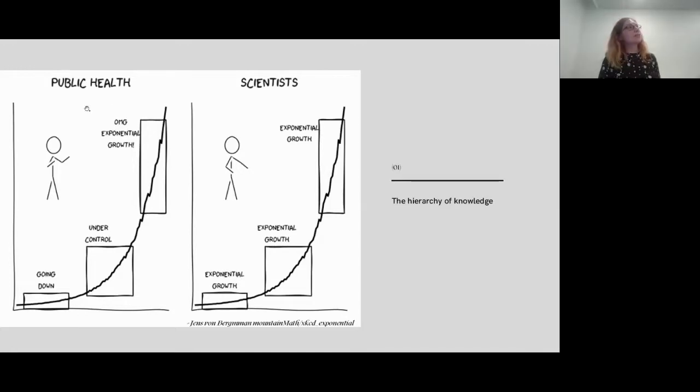For fun, I got you this little comic thing that Jens van Bergman created, which is obviously a commentary on the current situation with COVID and the pandemic. People sometimes change the public health officials with politicians. They look at the curve—we all know that curve, right? We've seen it before. And they call it something different: going down, under control. Oh my God, exponential growth, right?